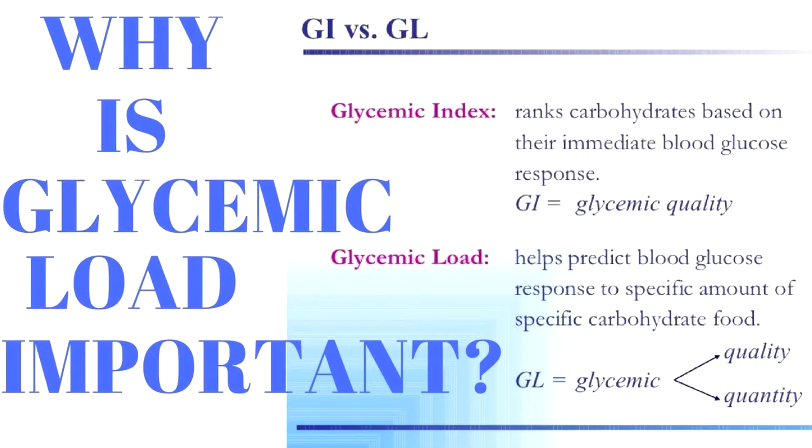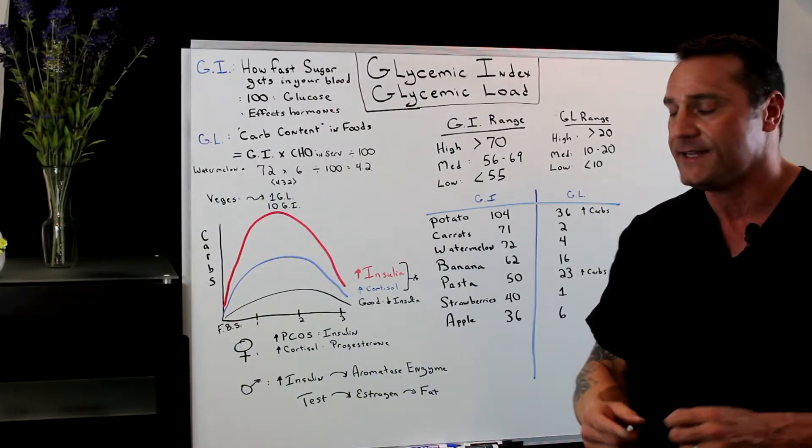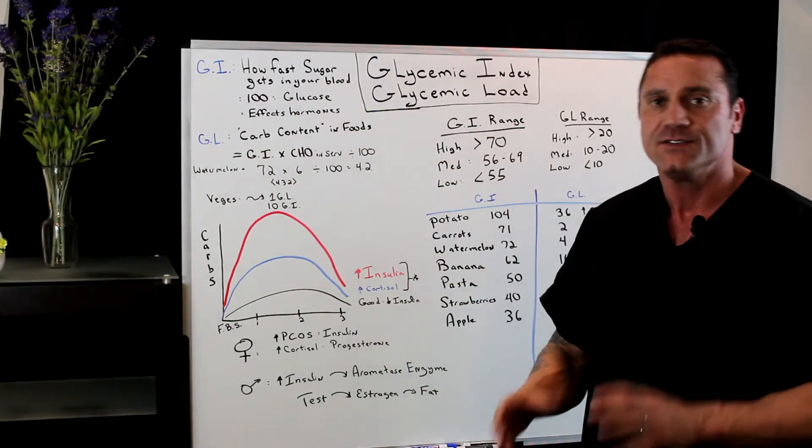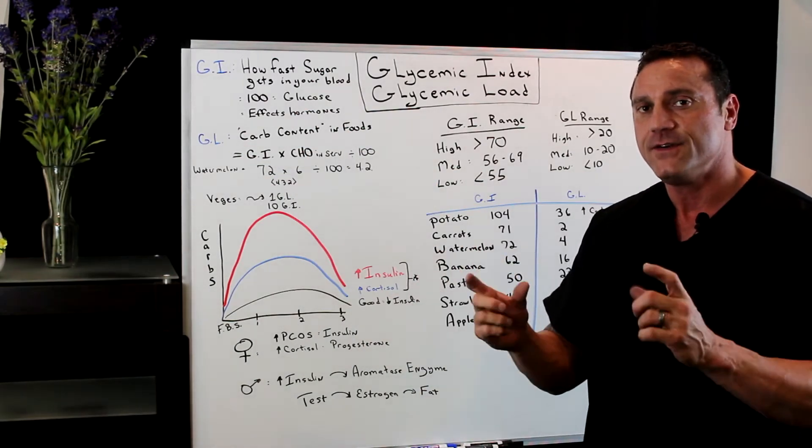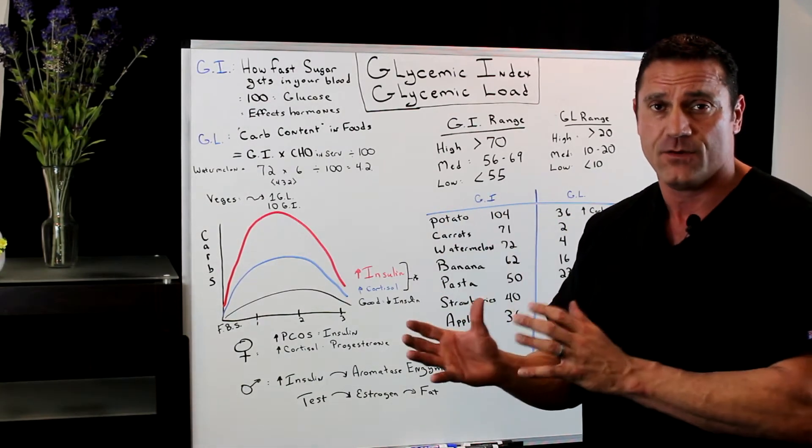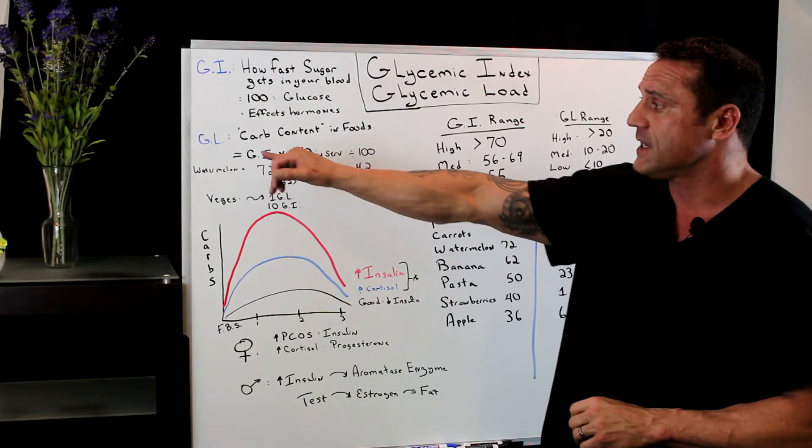You have the glycemic index as a measurement of how fast that blood sugar elevates. But the other one is the carb content in the foods because you can measure different foods and have that either work for you or against you.